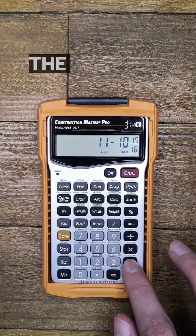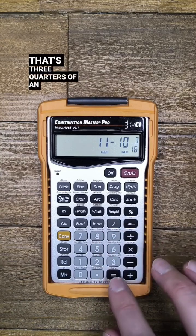And then subtract half the thickness of the king common rafter, let's say that's three quarters of an inch.